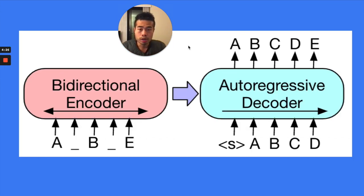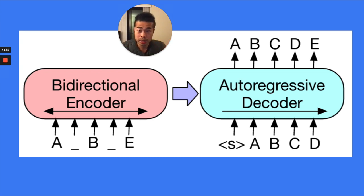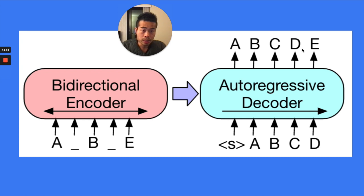So this is the BART model. BART model basically takes input text — it's a bidirectional encoder, it's naturally bidirectional. So it reads in both directions of text. Then the model tries to predict the original input A, B, C, D, E. It's not only the masked tokens — it also predicts the original inputs A, B, E. It will also predict those.